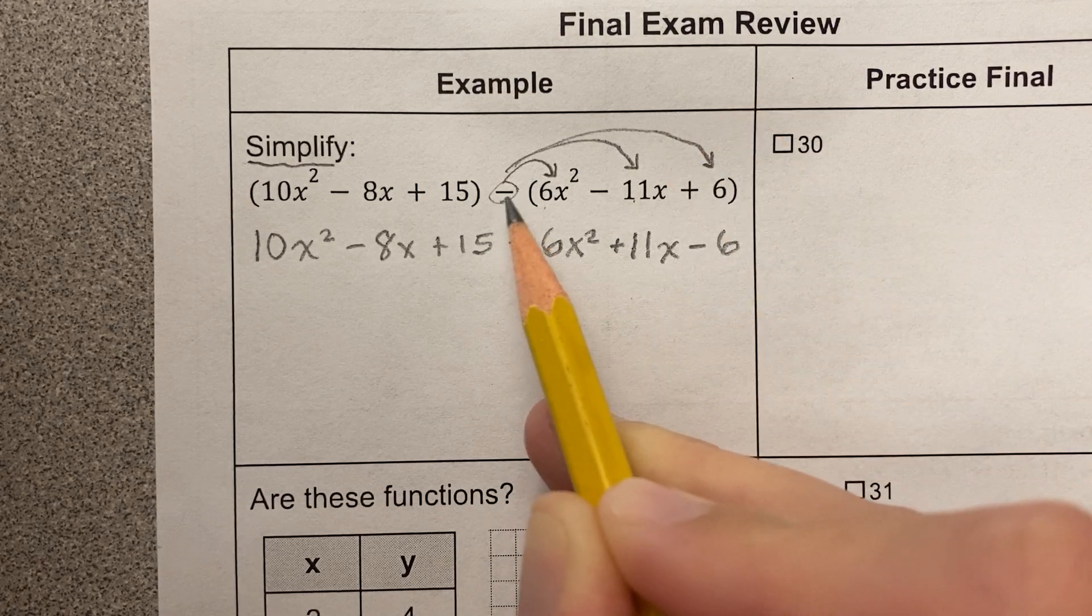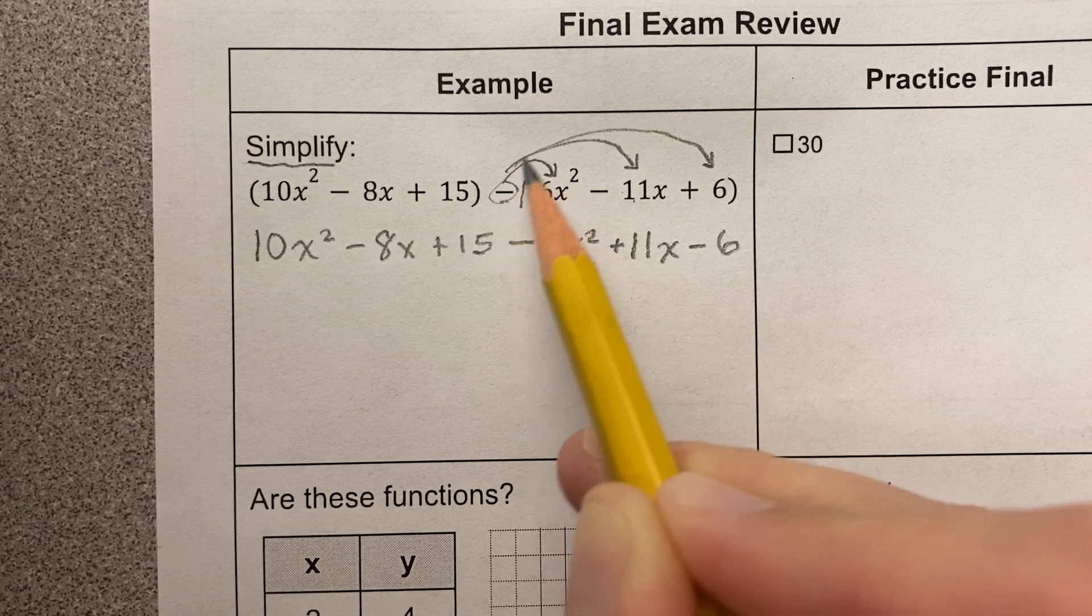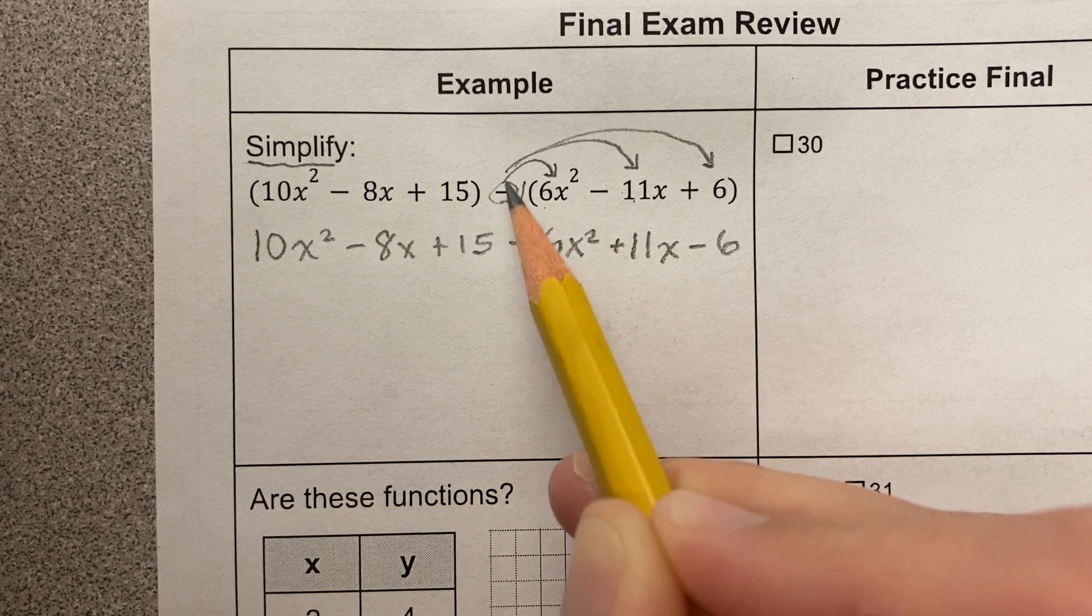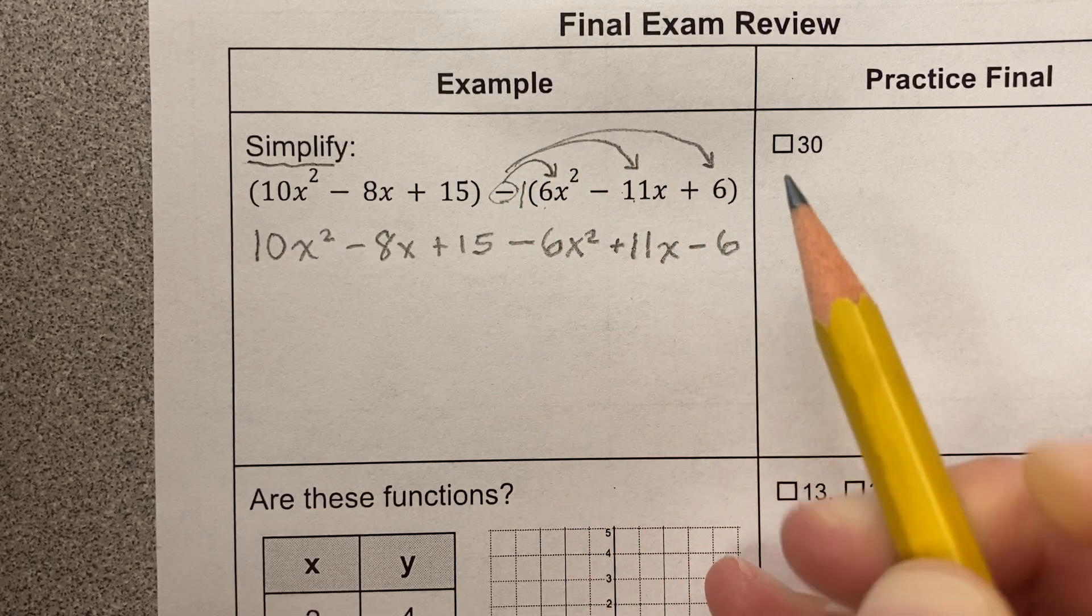So notice I was saying I subtracted, I subtracted, I subtracted. You could also view this as I'm multiplying this by negative 1. Negative 1 times positive 6 is negative 6, negative 1 times negative 11 is positive 11, negative 1 times positive 6 is negative 6.